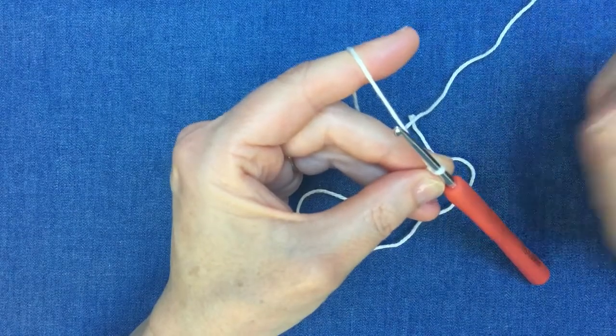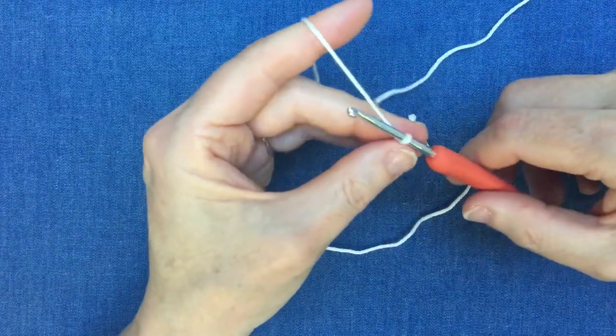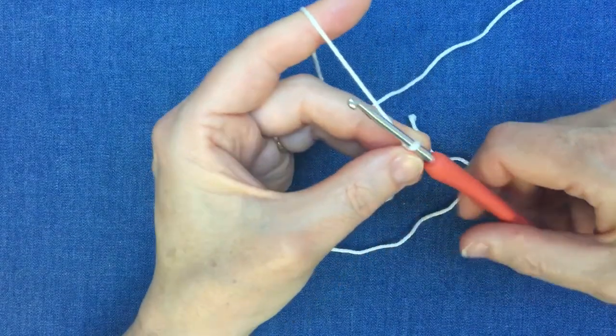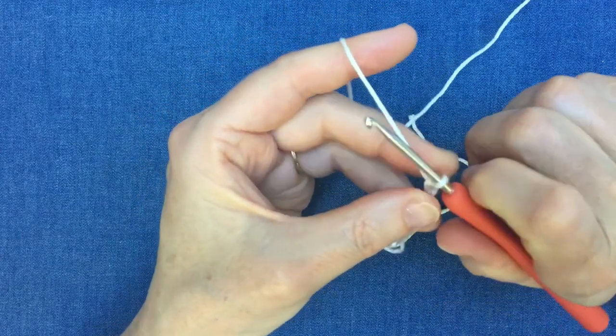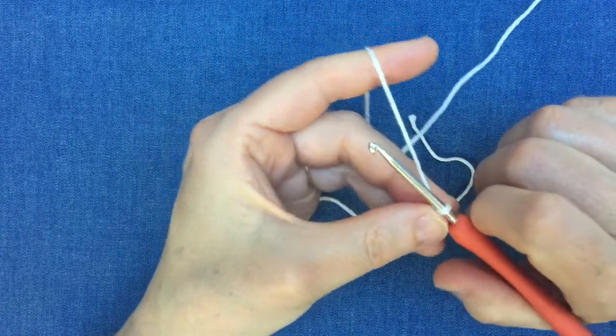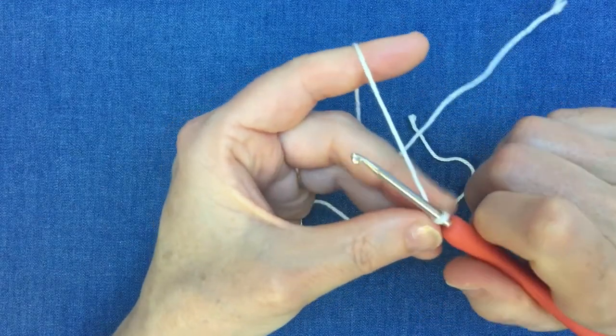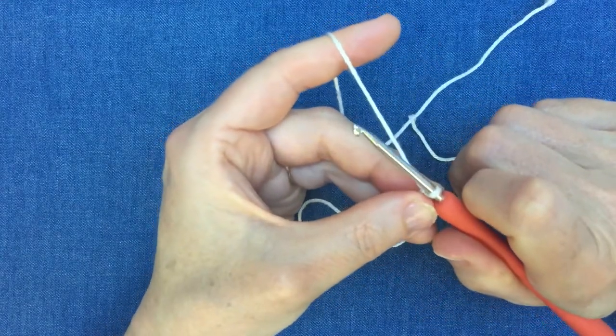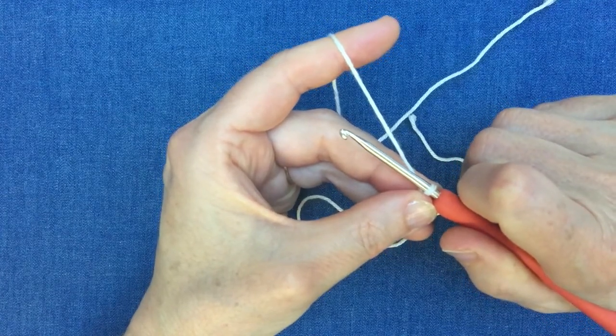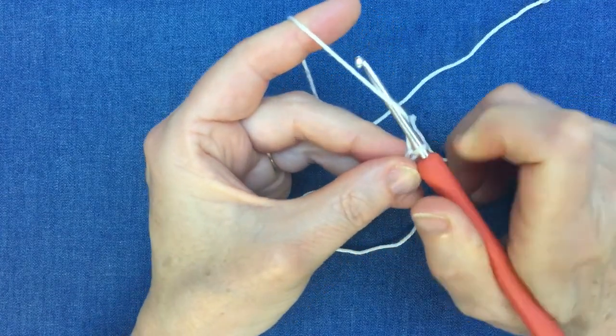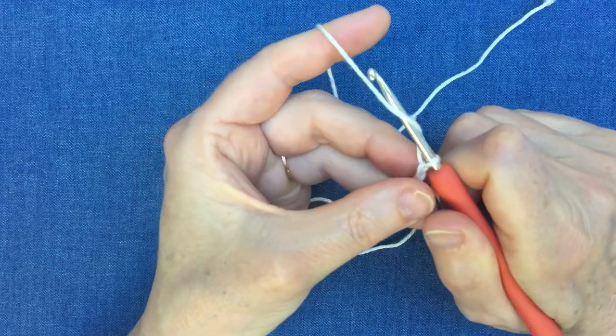Once you feel you've got control of that tension thread, which will take a bit of practice, you can then start doing some stitches. With my right hand with my hook, I'm now going to get used to doing this action. Once you get used to this, this is the same action you'll do all the time for all your stitches. You take it to the left or anti-clockwise, run underneath that thread and you'll see it's run over the top of the hook.